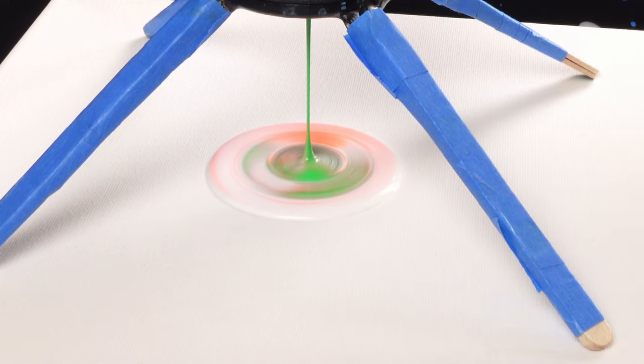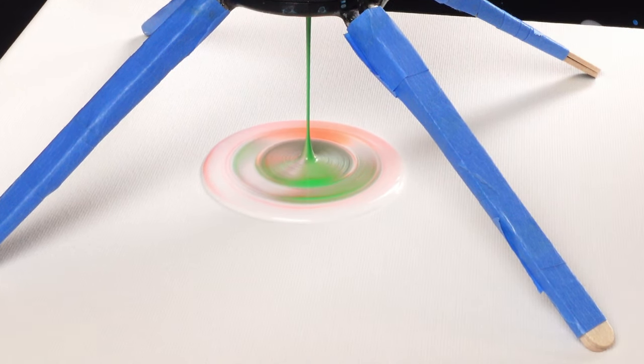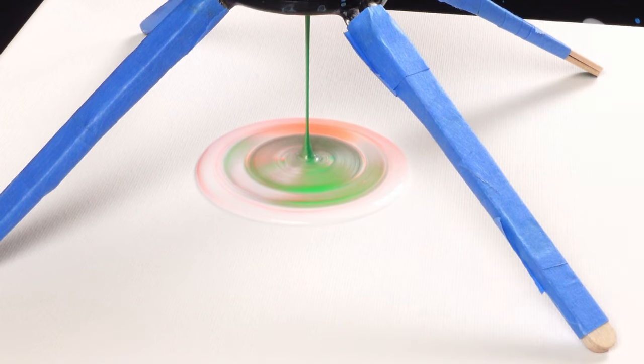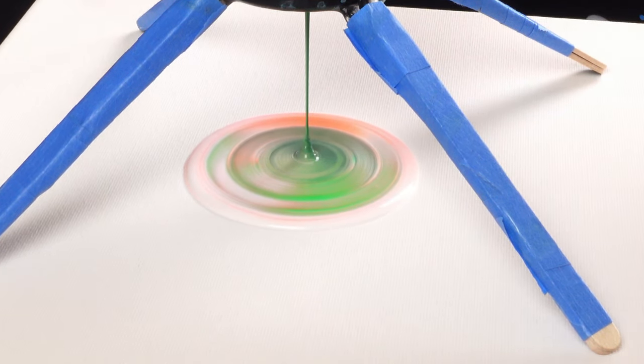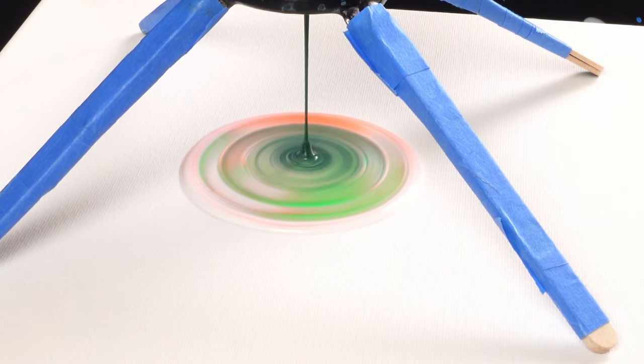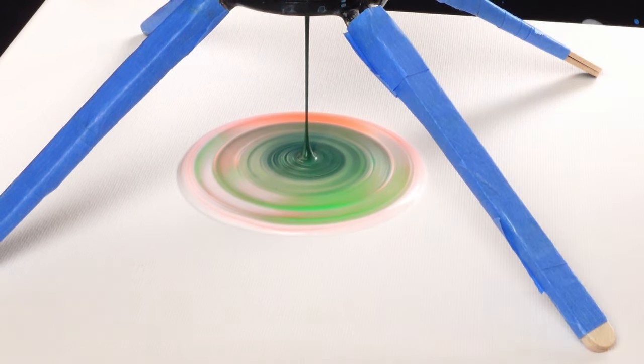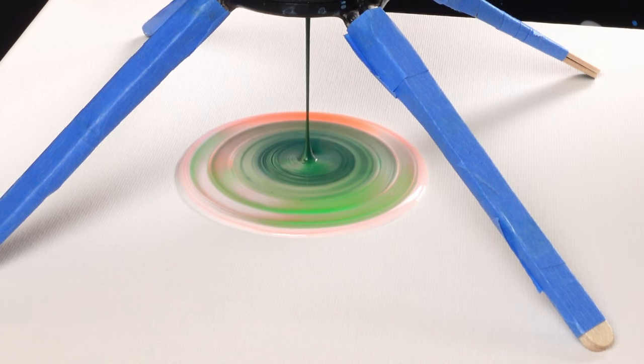...a fluorescent orange, a fluorescent green, a sap green, and then a phthalo green. We have a little bit of titanium white just to add a little bit of contrast. And with that, we're just going to get started.